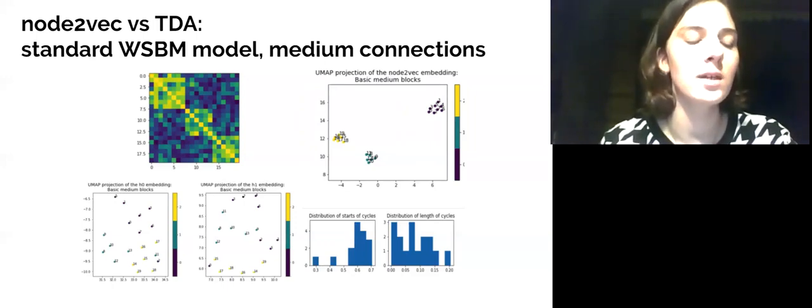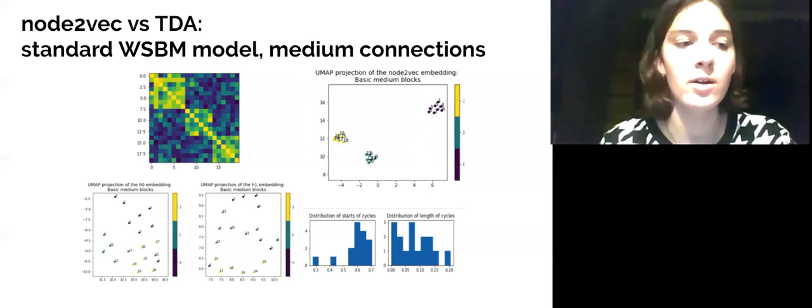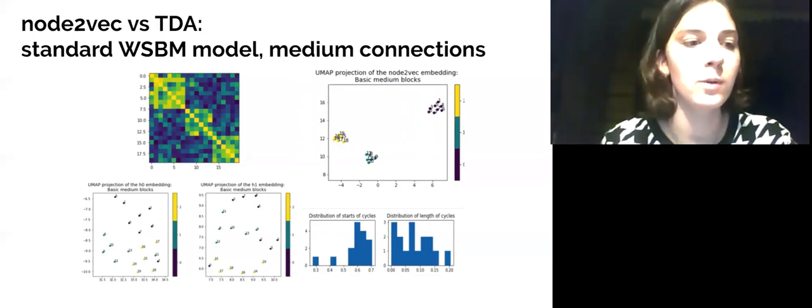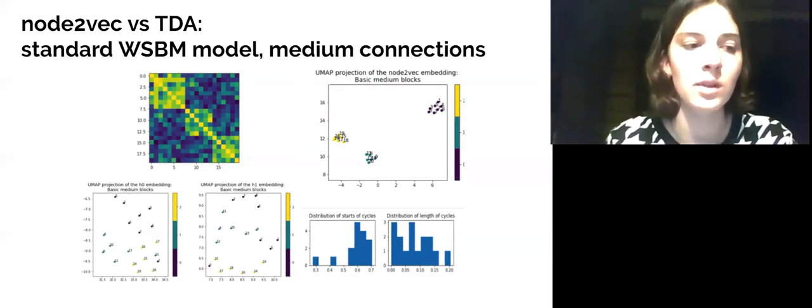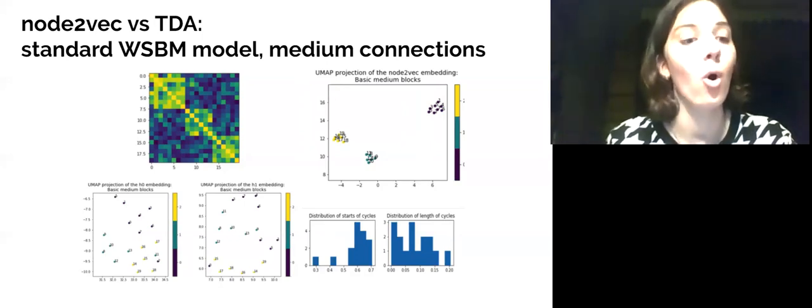Besides, distribution of the interval starts tells that there are a lot of weakly connected small blocks, and one cycle describing long-lasting distance connection between all three blocks.